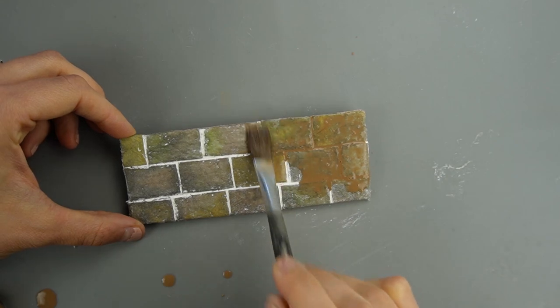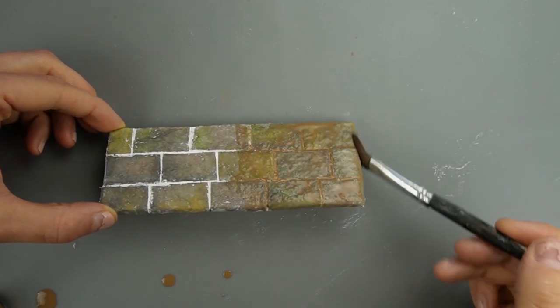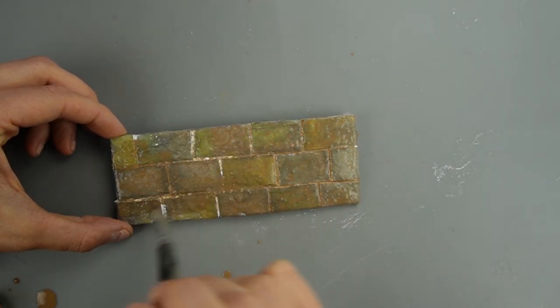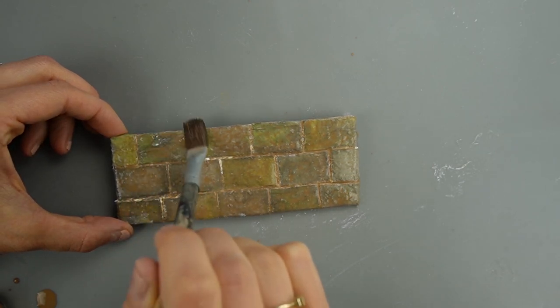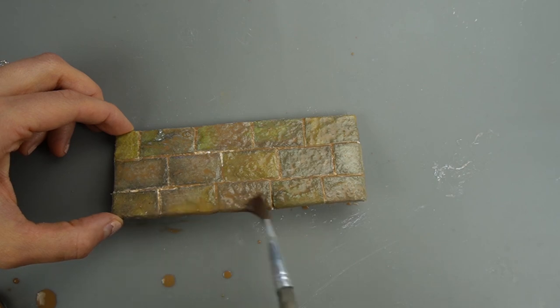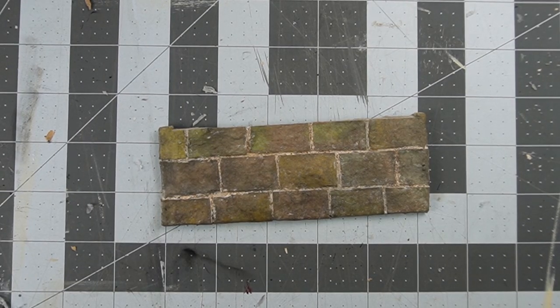To change the color of the grout you can apply a wash. If you don't want the wash to affect the color of the stones make sure you wipe it off of the stones after you apply it and before it dries. I'm using this particular hearth in what's supposed to be a kitchen from the 1800s so I left the brown wash on the surface of my stones to make them look older.